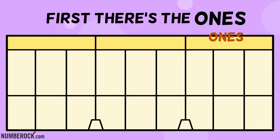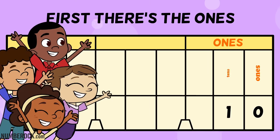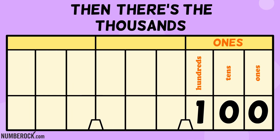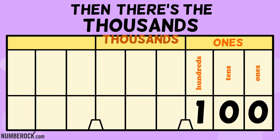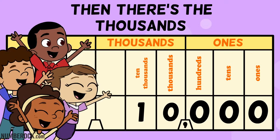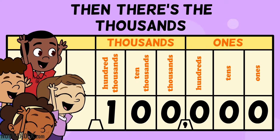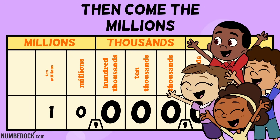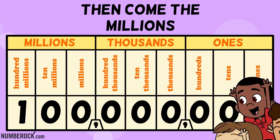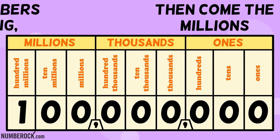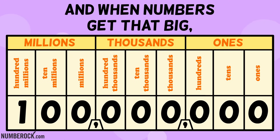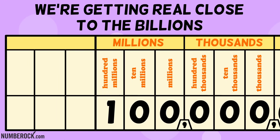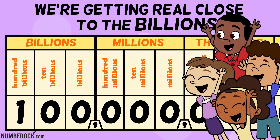First there's the ones: ones, tens, hundreds. Then there's the thousands: one thousands, ten thousands, hundred thousands. Then come the millions: one millions, ten millions, hundred millions. And when numbers get that big, we're getting real close to the billions.